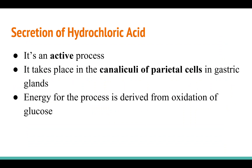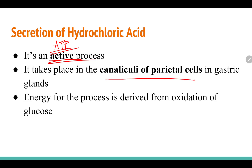Hydrochloric acid secretion is an active process, which means ATP is required. It takes place in the canaliculi of parietal cells and the energy for this process is derived from oxidation of glucose.